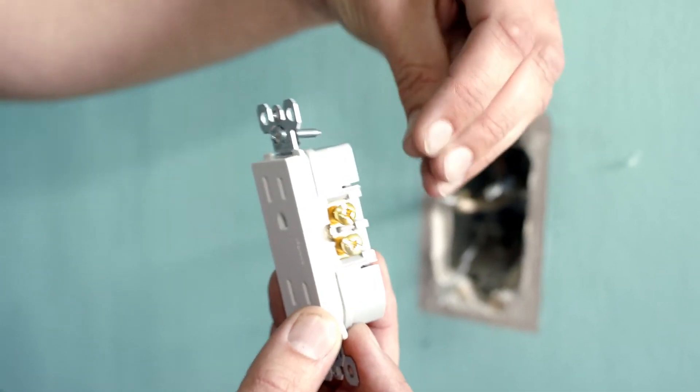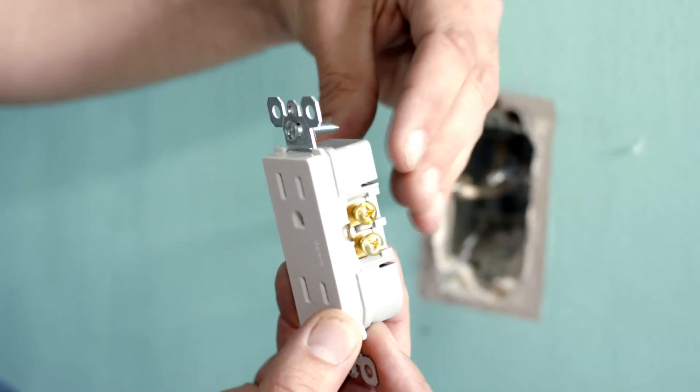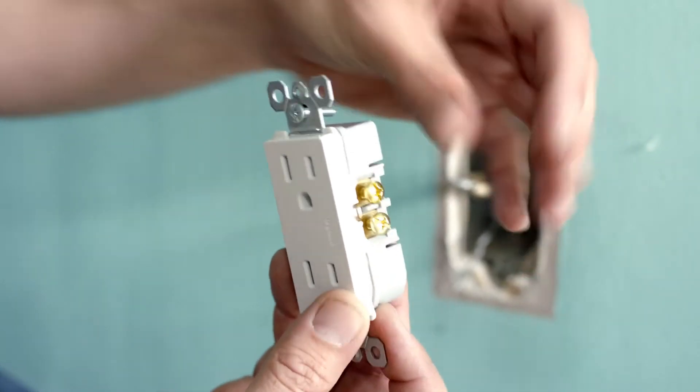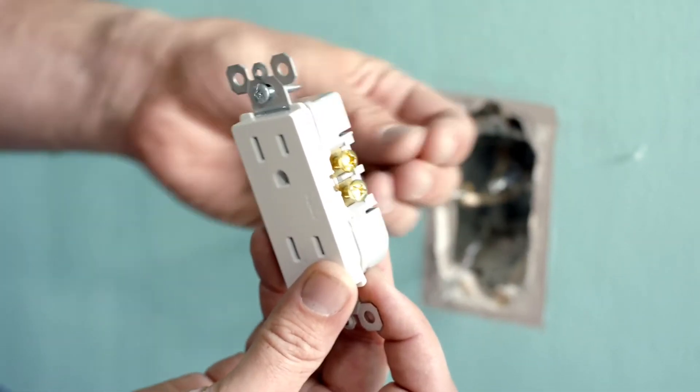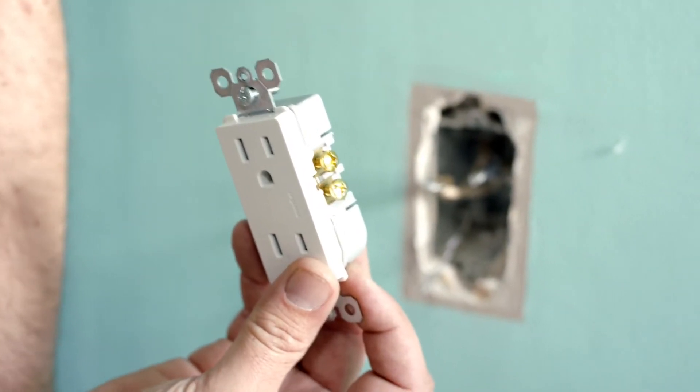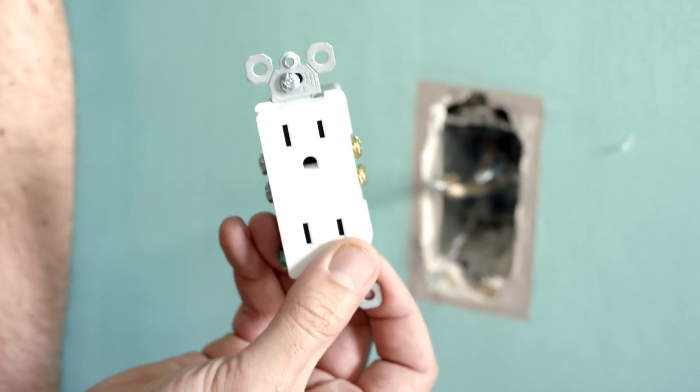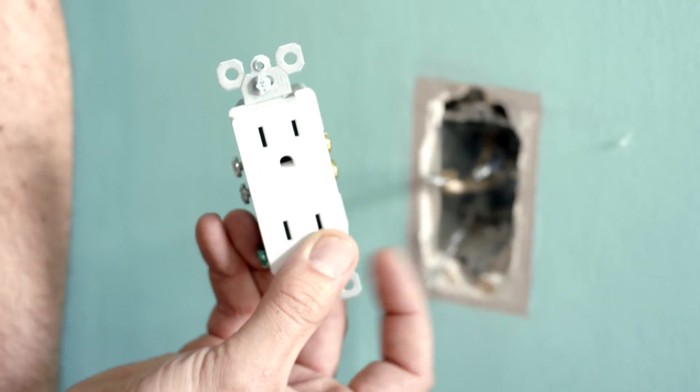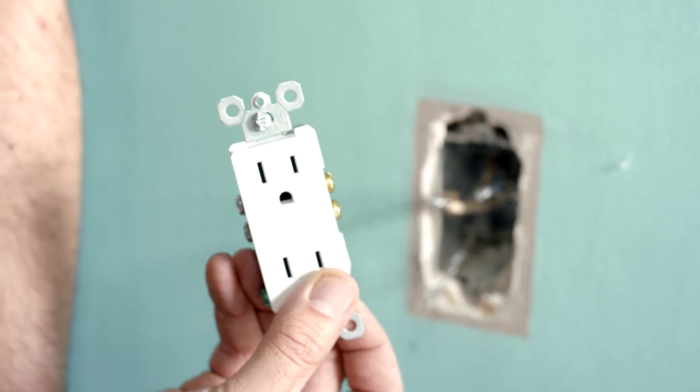The insulation can come back and start arcing either to the box or another neutral or ground. If you have a Federal panel, this can make it even worse because Federal panels won't break the connection sometimes. If the connection doesn't break, you've got a circumstance for a fire. You've got arcing inside your box, the breaker's not blowing, and things that are non-combustible start lighting on fire and smoldering inside.